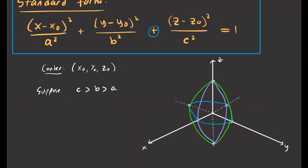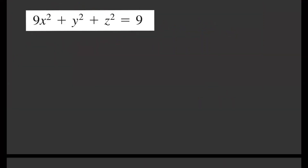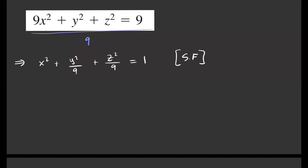Let me give you a specific example. This is an ellipsoid because all terms are positive and it's equal to a constant. We make that constant 1 by dividing everything by 9, giving us: x squared plus y squared over 9 plus z squared over 9 equals 1. That's the standard form.